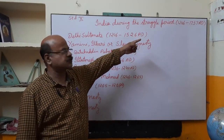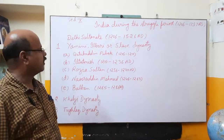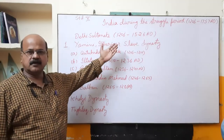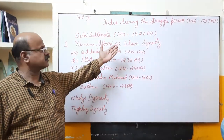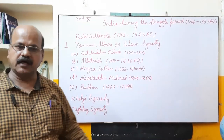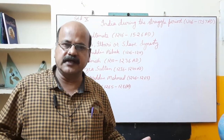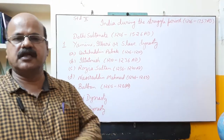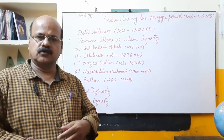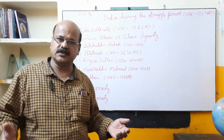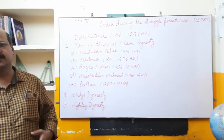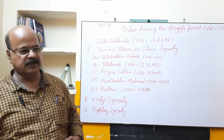This period spans from 206 to 1757 AD and begins with the Delhi Sultanate. There were many dynasties in the Delhi Sultanate: the Slave dynasty, Tughlaq dynasty, Khalji dynasty, Sayyid dynasty, and Lodhi dynasty.